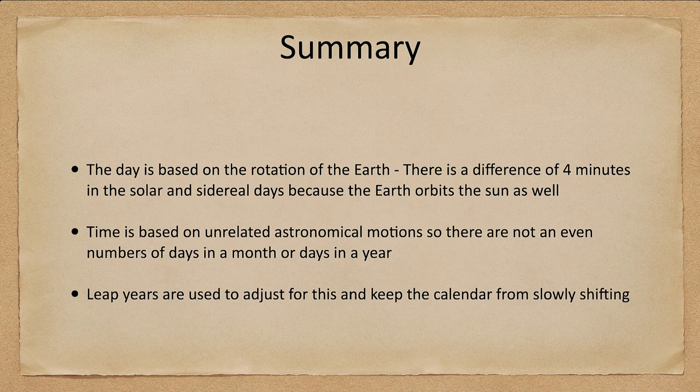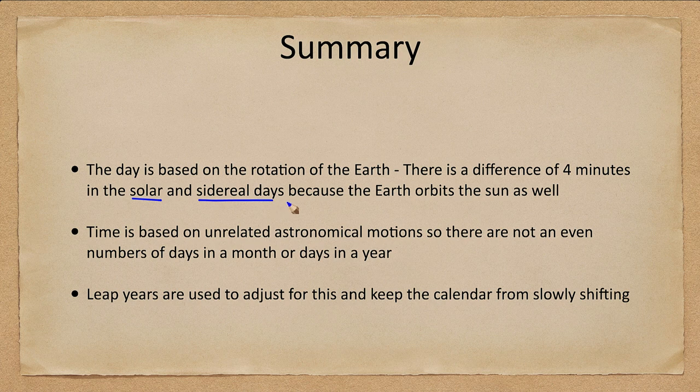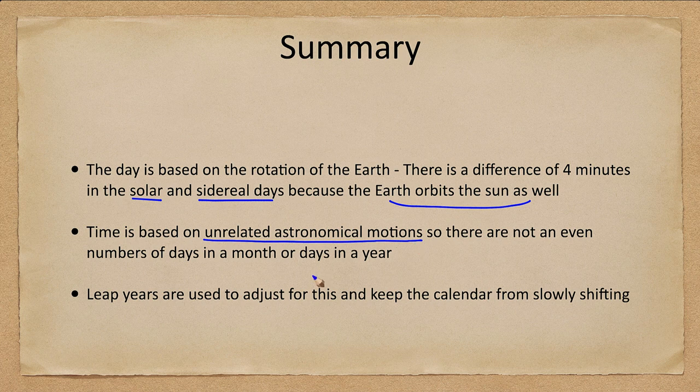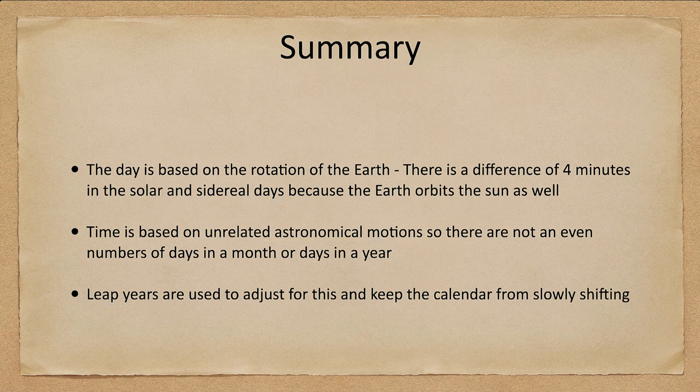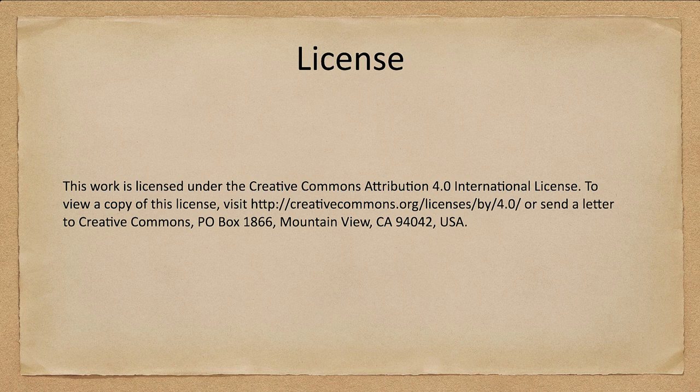So let's go ahead and finish up with our summary. What we've looked at here is the day based on the rotation of the earth and there is a difference between the solar day which is what we use for measurements and the sidereal day which is the actual rotation of the earth because earth is moving around the sun at the same time. Our measurements of time are based on unrelated astronomical motions so we do not get an even number of days in a month or days in a year. And we talked about leap years and how they're used to make adjustments and keep the calendar from shifting over time. So that concludes this lecture on time and the calendar. We'll be back again next time for another topic in astronomy. So until then have a great day everyone and I will see you in class.